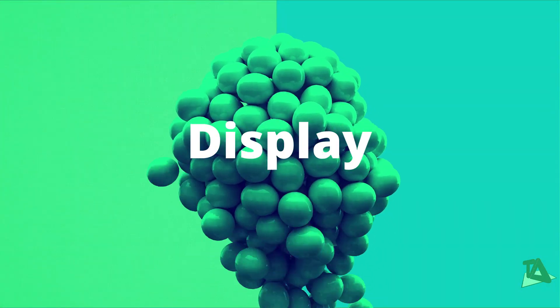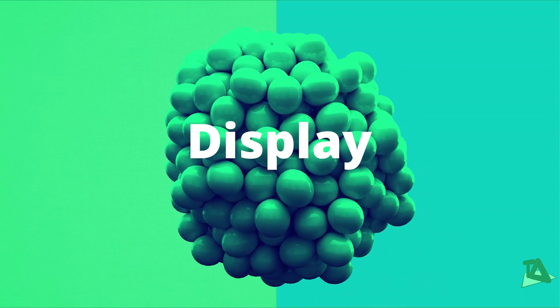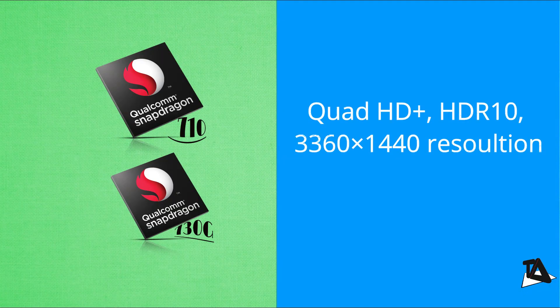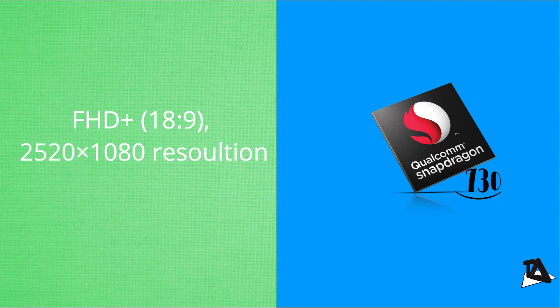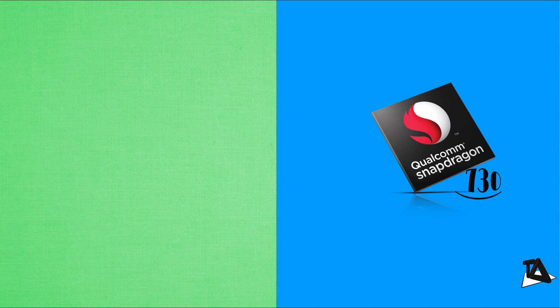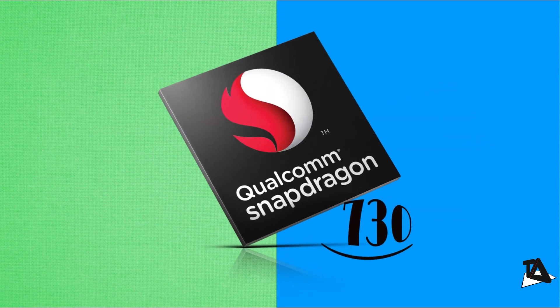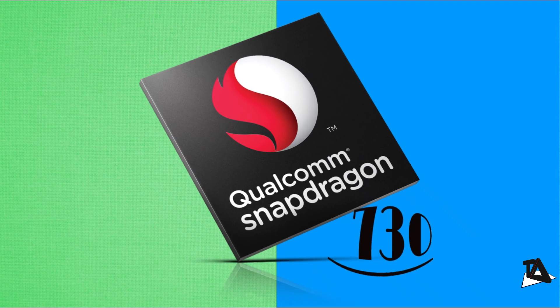For display support, Snapdragon 710 and Snapdragon 730G both support Quad HD+ HDR10 at 3360x1440 resolution. Interestingly, Snapdragon 730 only supports Full HD at an 18:9 ratio (2520x1080), leaving it without QHD+ display support — possibly for power saving reasons.